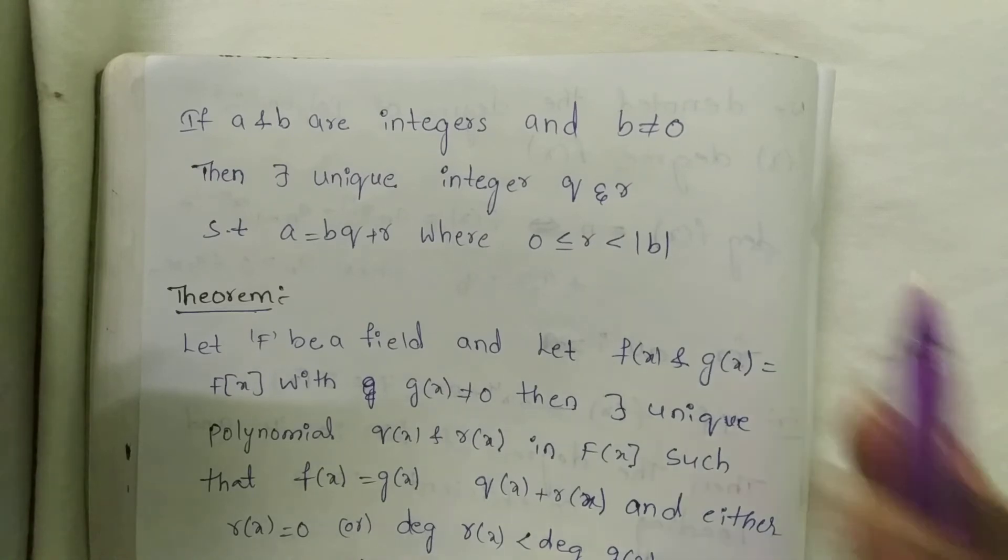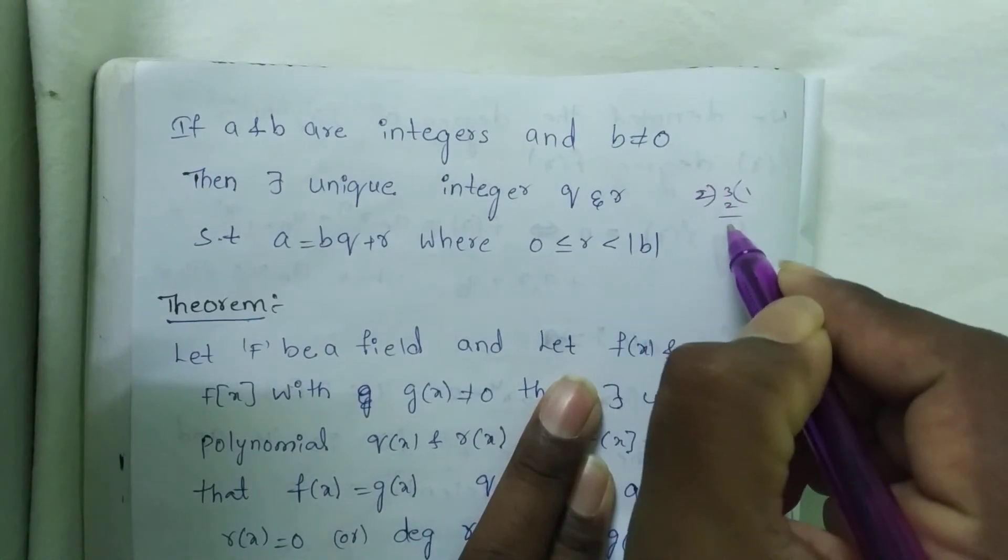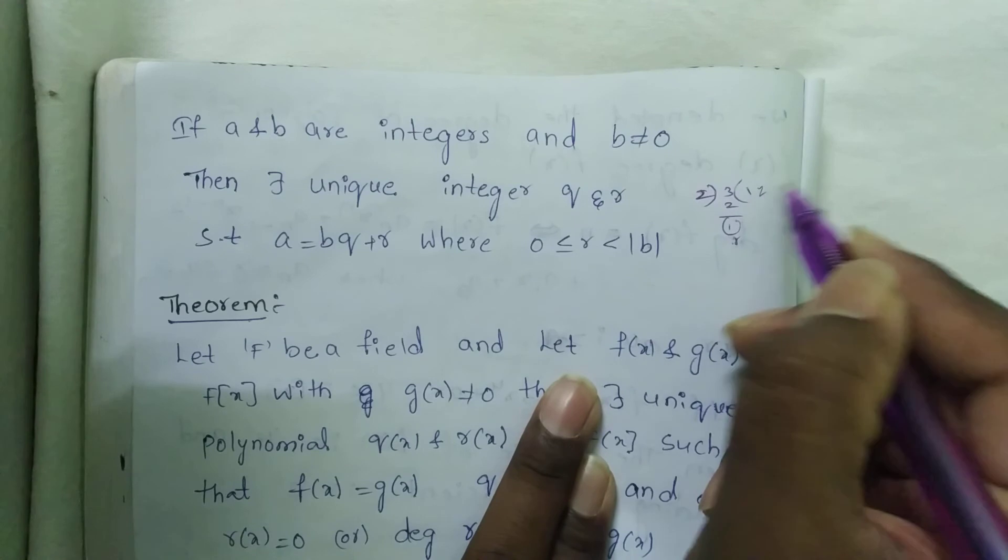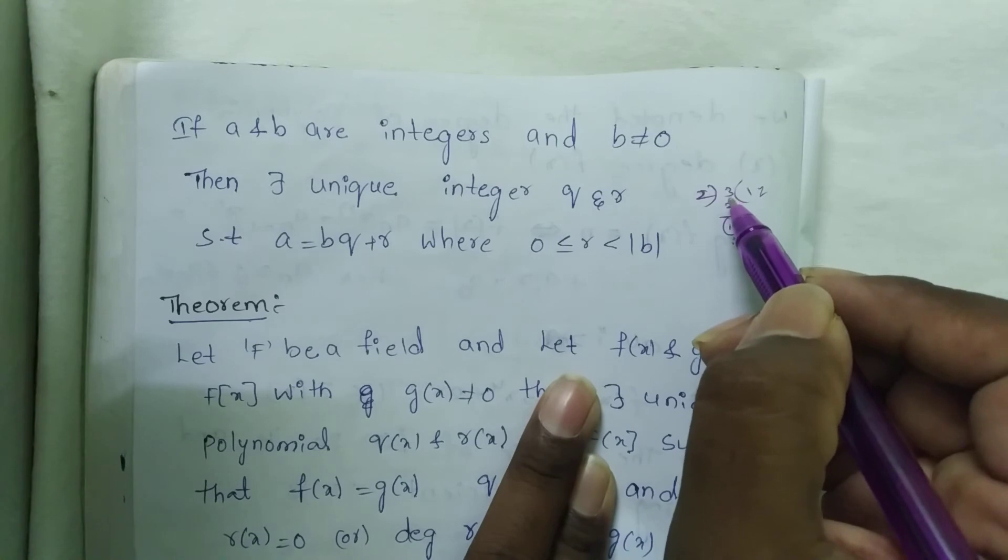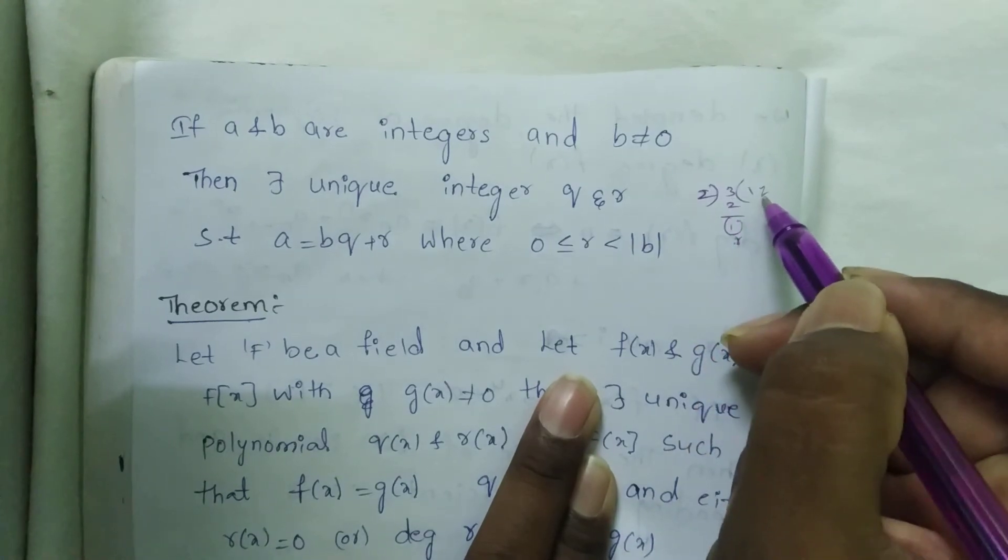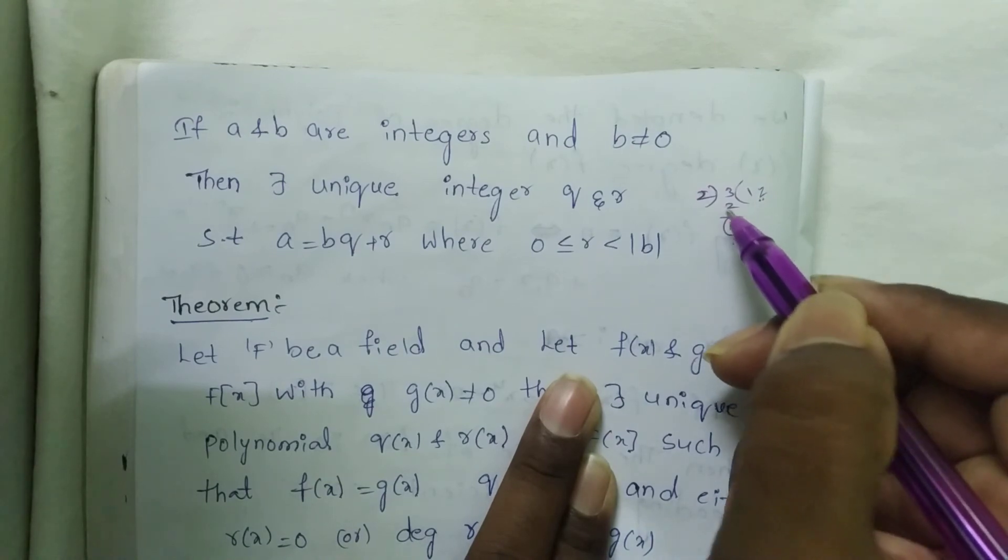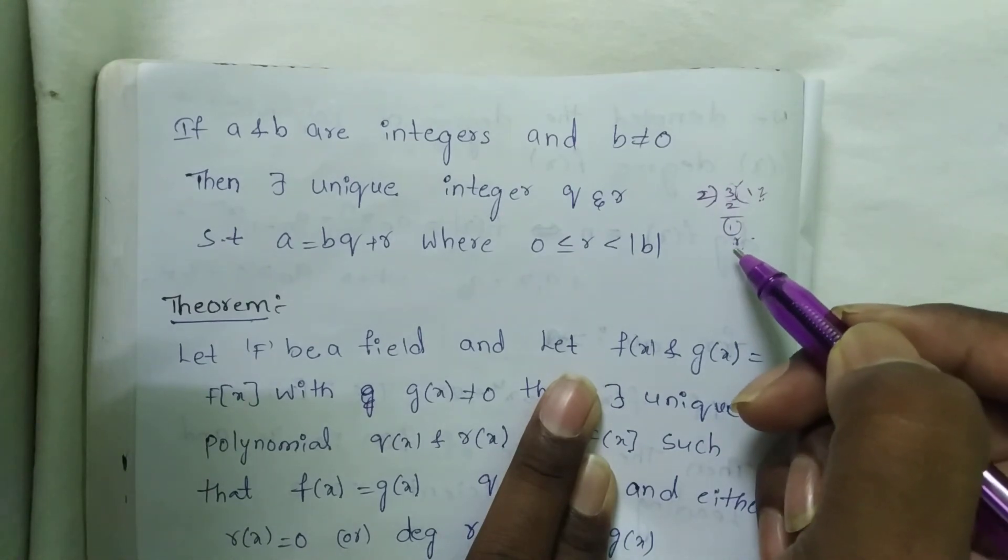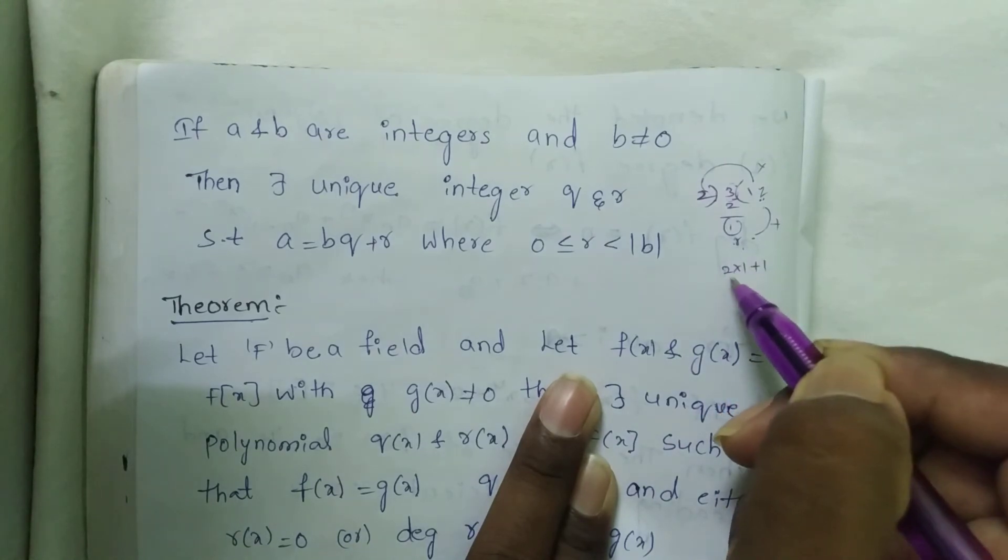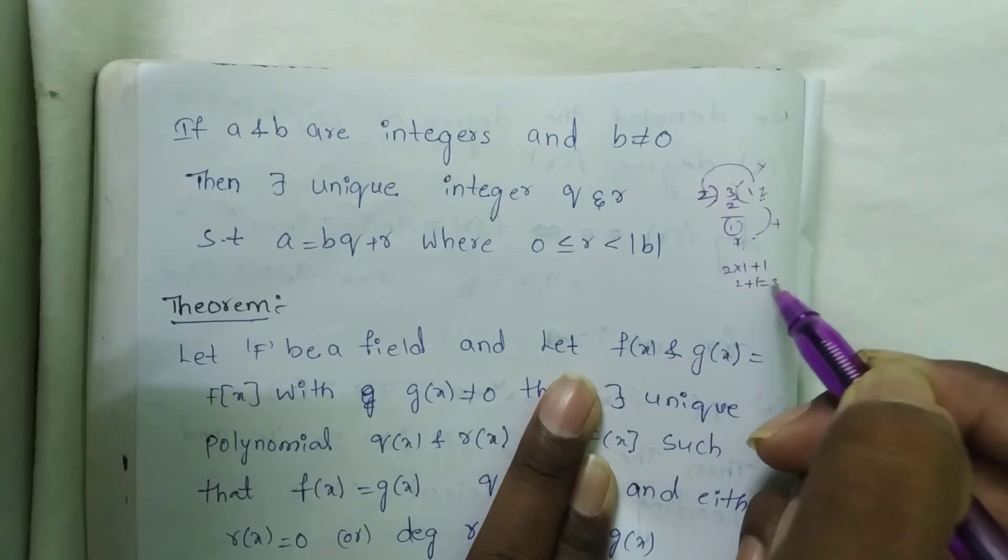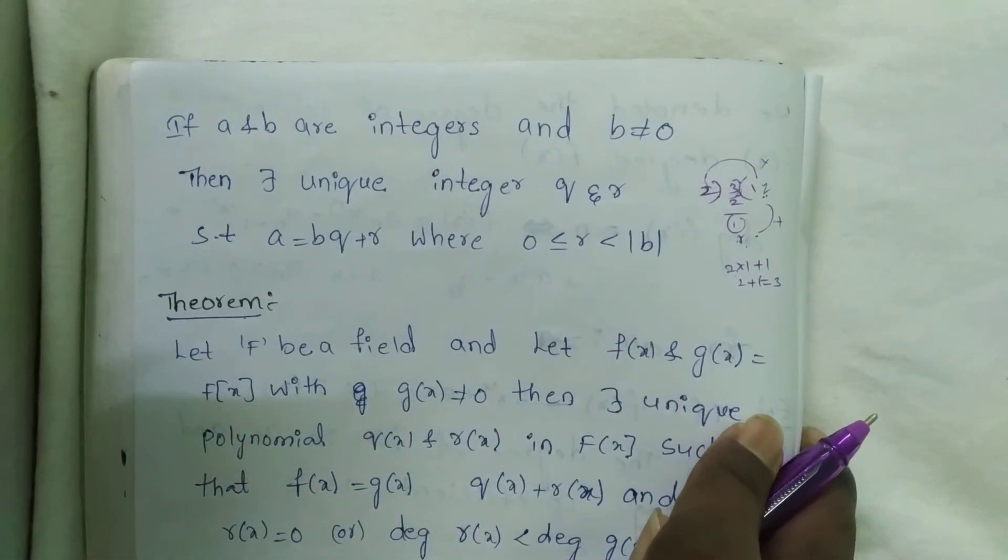For example, 2 + 1 = 3, or 2×1 + 1 = 3. This is multiplication, this is addition: 2×1 + 1 = 2 + 1 = 3. Then a = bq + r where 0 ≤ r < |b|.